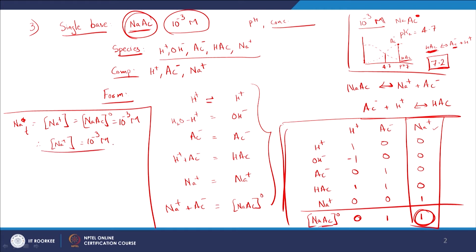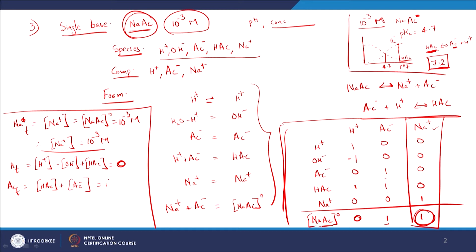Now setting up the relevant equations: H_total equals concentration of H⁺ minus concentration of OH⁻ plus concentration of HAc, and that is equal to 0 because there is no H source added - that is the key difference here. For Ac_total: it equals concentration of HAc at equilibrium plus concentration of Ac⁻ at equilibrium, and that equals 1 times NaAc₀ initial, which equals 10⁻³ molar.